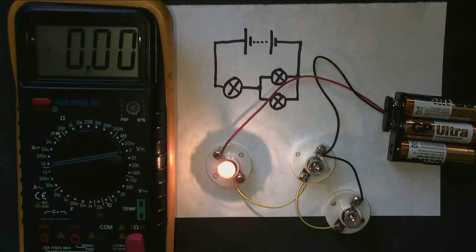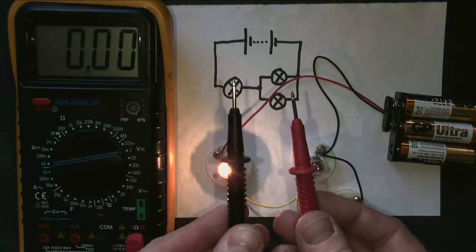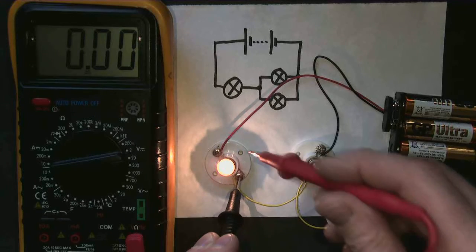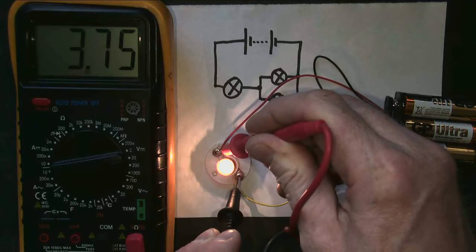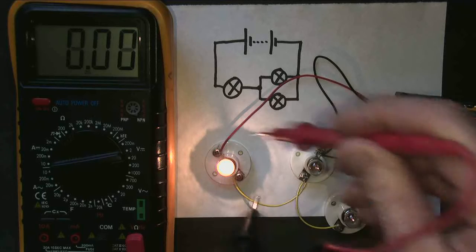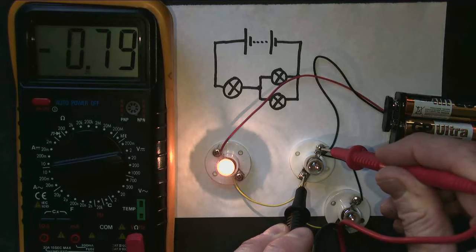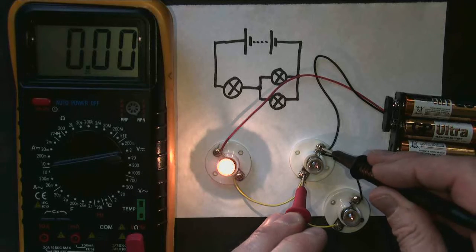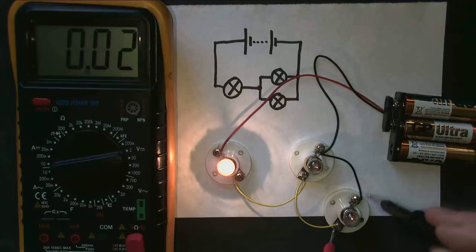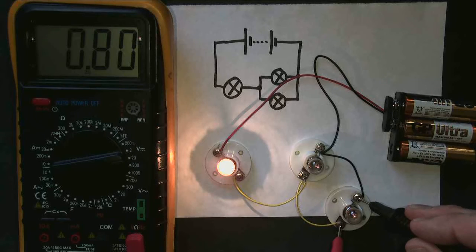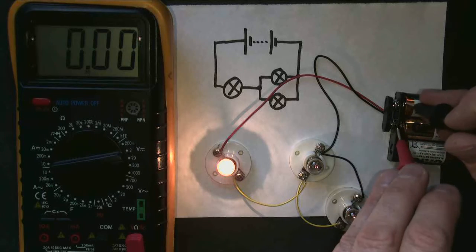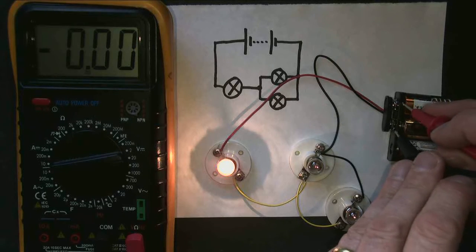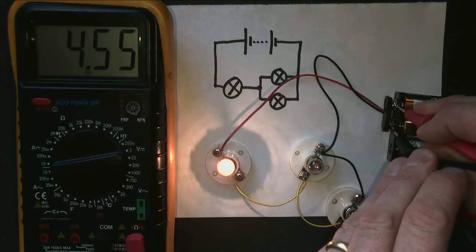The bulbs aren't all the same. We're going to try and measure some voltages — here's my voltmeter, here are my probes. Remember these because we're going to write them down. So the first bulb on its own: 3.75 volts. This bulb here: 0.8 volts. This bulb here: 0.8 volts. The battery pack: 4.55 volts.